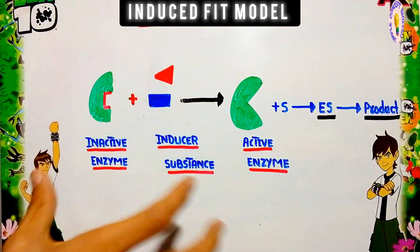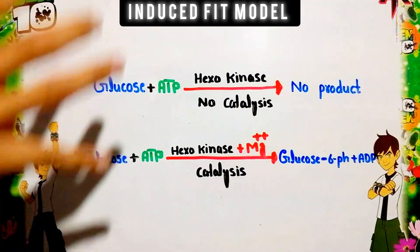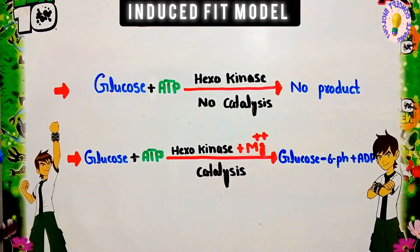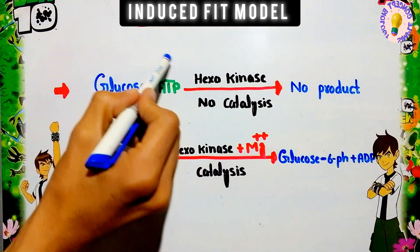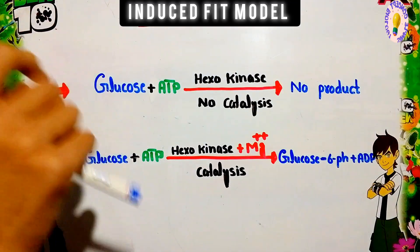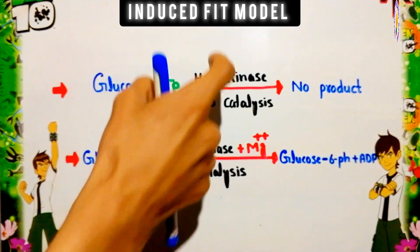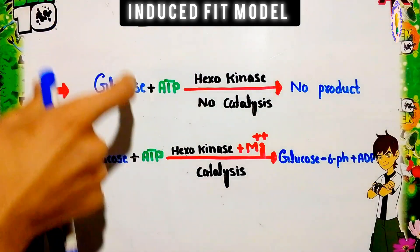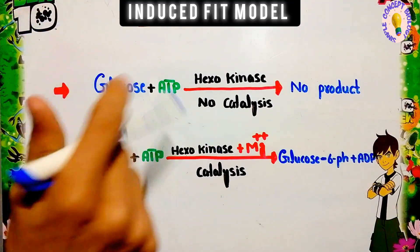Now we will take a specific enzyme to explain the induced fit model. An important reaction in glycolysis is where glucose combines with ATP and is converted into a product. In this step, the transfer of inorganic phosphate from ATP to glucose is catalyzed by a specific enzyme called hexokinase. This hexokinase enzyme mainly transfers the inorganic phosphate from ATP to glucose. However, this process does not occur initially and no product is formed.